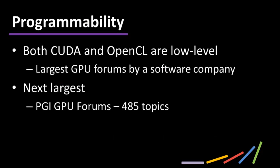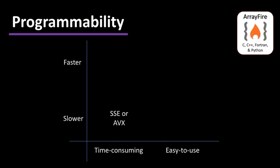The fifth and final feature is programmability. Both CUDA and OpenCL are low-level; it is time-consuming to do GPU kernel development in either platform, with the bulk of that time spent redesigning algorithms to exploit data parallelism. This is why the GPU computing market has shifted major focus towards programmability. To understand the landscape, consider a simple two-by-two graph: faster vs. slower technologies on the y-axis and time-consuming vs. easy-to-use on the x-axis.